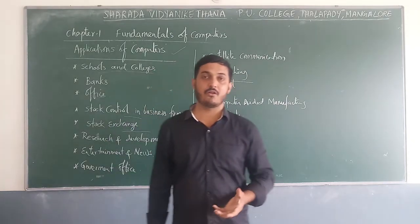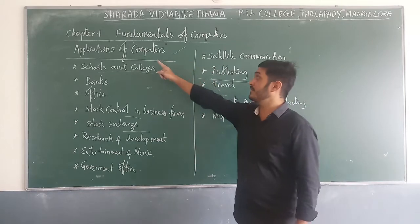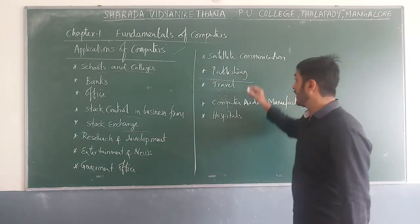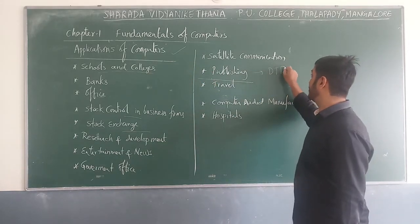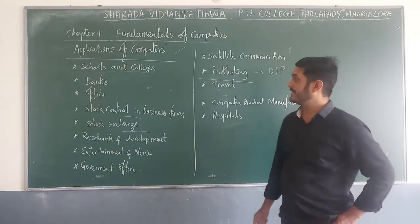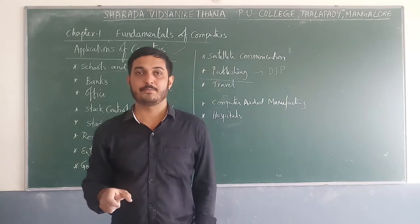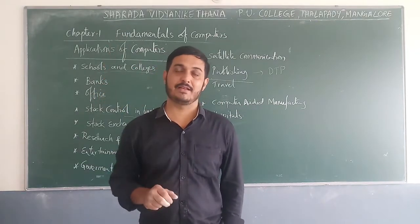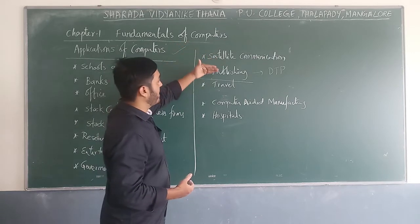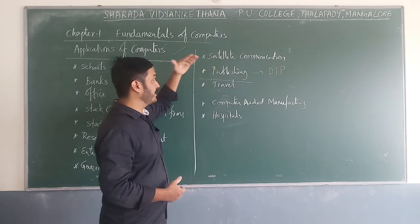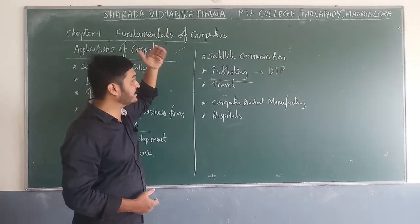In publishing — in press or online — we need DTP software: Desktop Publishing, which is used to set page layouts according to space. This is an important application of computers under publishing. The next application is travel, where computers are needed to book tickets — whether air tickets or train tickets — using the internet.